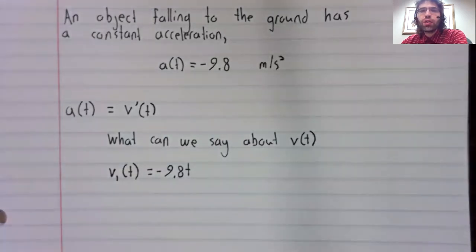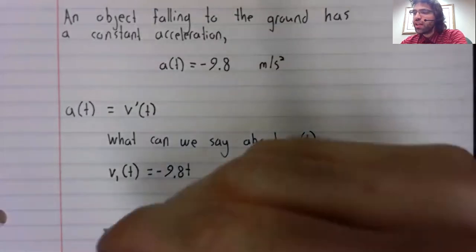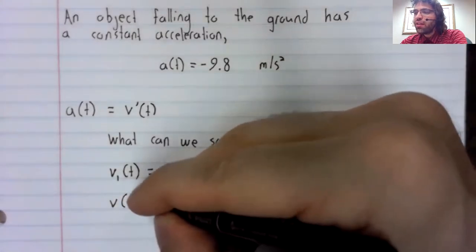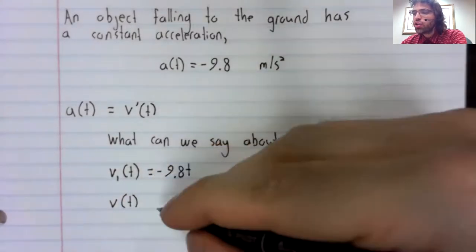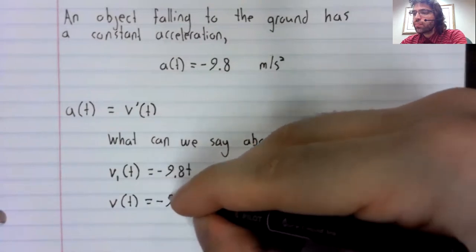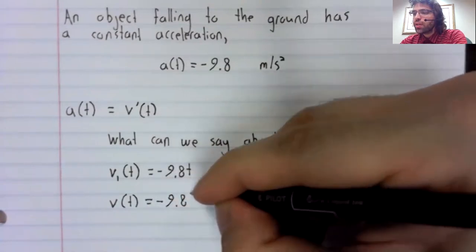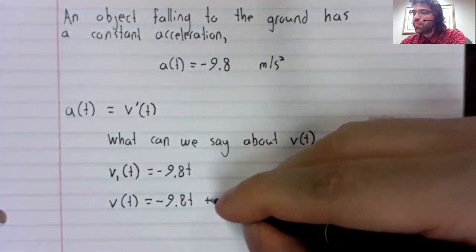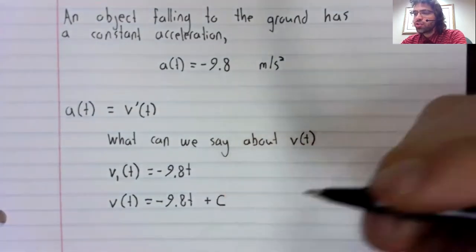What the theorem we just stated now allows us to say is that any velocity function is this plus a constant.